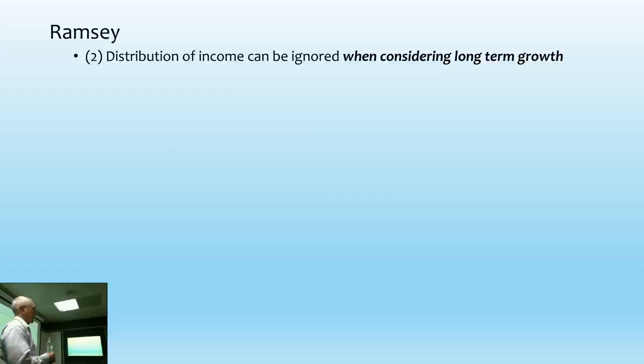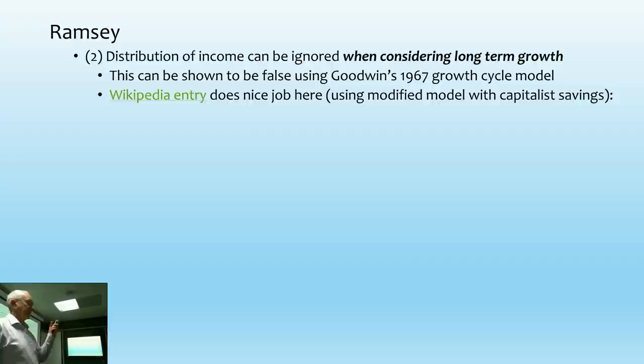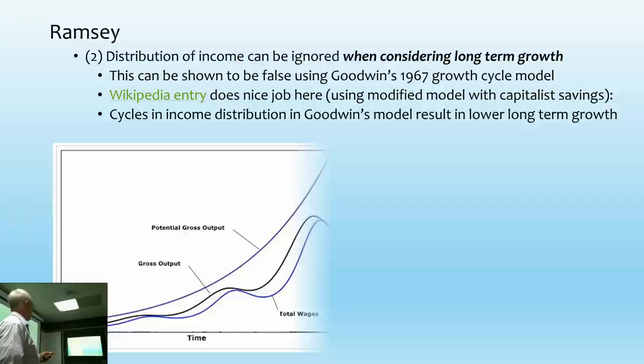The second assumption I want to spend time on: Ramsey made another assumption that you can ignore the distribution of income when you're considering long-term growth. That seems a less unreasonable assumption than representing the entire society with a single utility surface. But if you look at Goodwin's 1967 growth model — which is the foundation of my work in post-Keynesian modelling — what Wikipedia explains quite nicely is that cycles result in lower long-term growth.